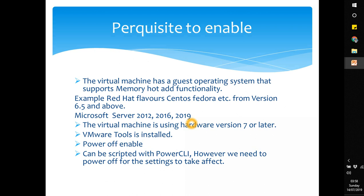To enable hot add, you need to power off the VM at least once when enabling the feature for the first time. This can be scripted with PowerCLI — you can run a script to enable hot add CPU and memory, but you cannot actually start using it until you power off and power on. Simply rebooting the OS is not enough; it must be a power off and power on operation.